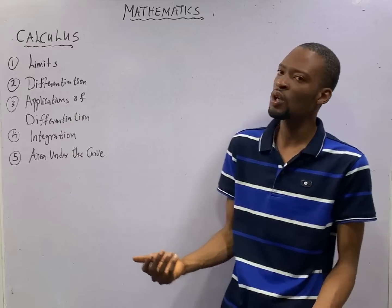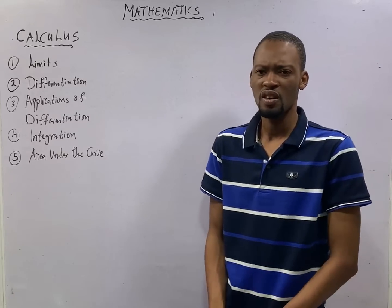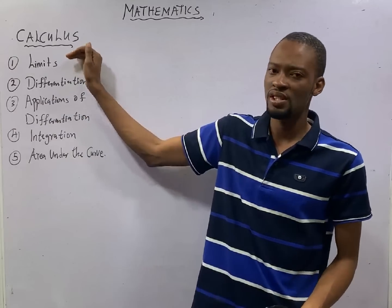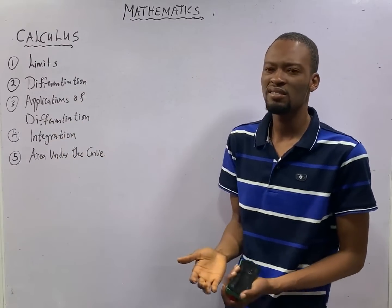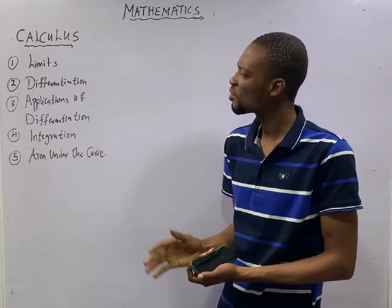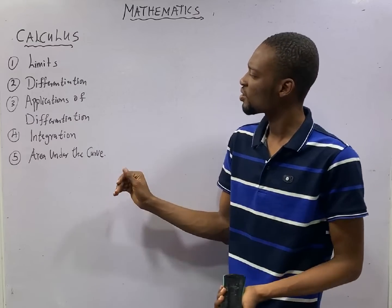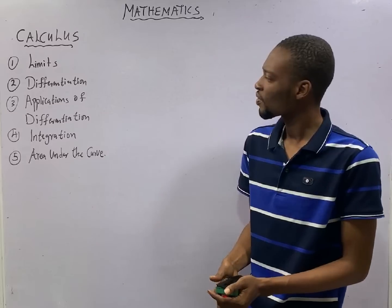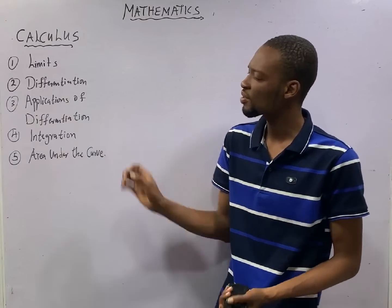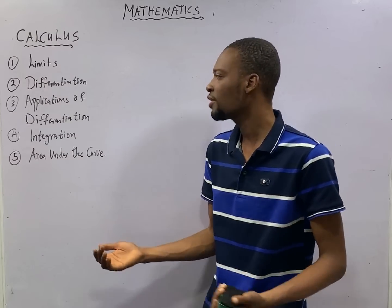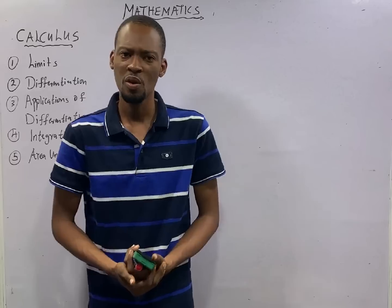Many persons call calculus the further math part of mathematics — that is also fine. So far as Jam is concerned, you need to know limits of a function, differentiation — simple, algebraic, and trigonometric differentiation — and the applications of differentiation: maxima and minima, and rate of change. Jam also expects you to know integration and area under the curve, which is an application of integration.